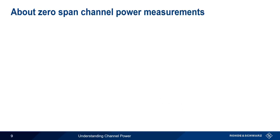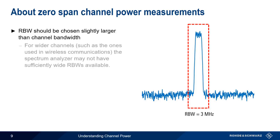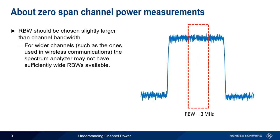When making channel power measurements in zero span mode, a resolution bandwidth slightly wider than the channel bandwidth should be chosen. For example, if we have a 1.4 MHz wide channel, a 3 MHz wide resolution bandwidth would be appropriate. This can be problematic when trying to measure wider channels like those used in wireless communications, because a spectrum analyzer may not have a resolution bandwidth that's wide enough to cover the entire signal.